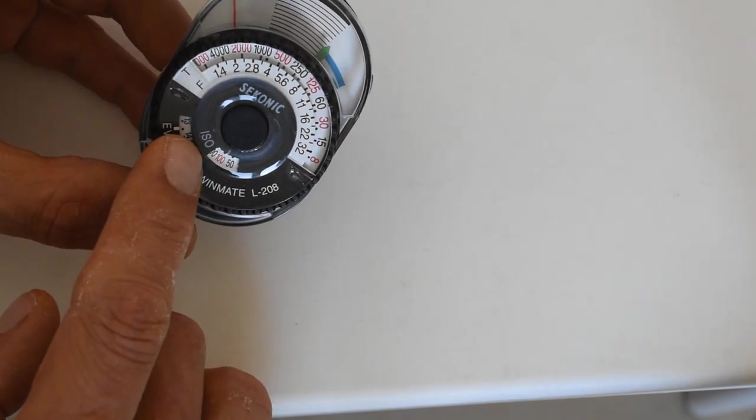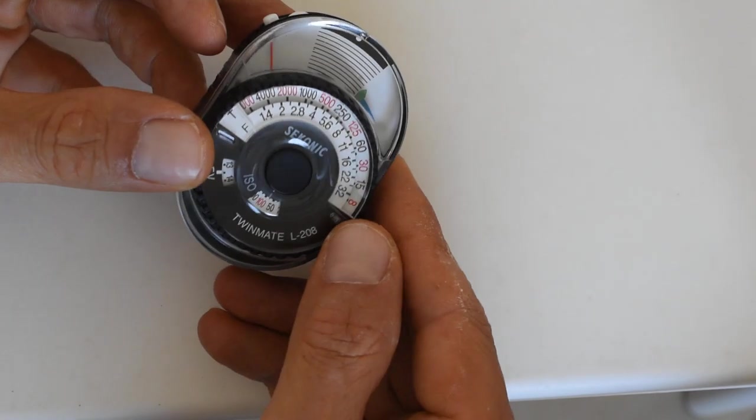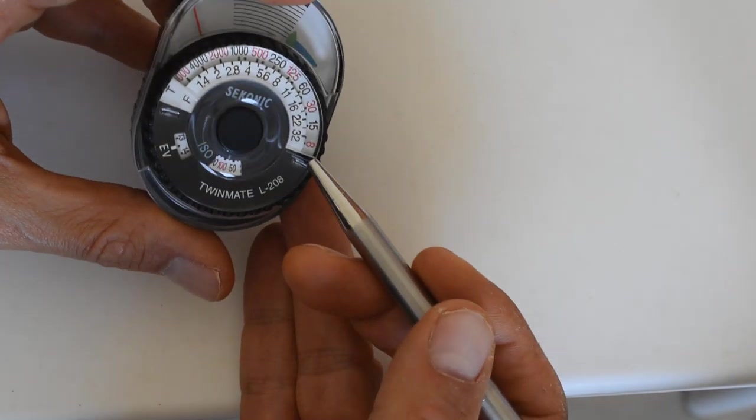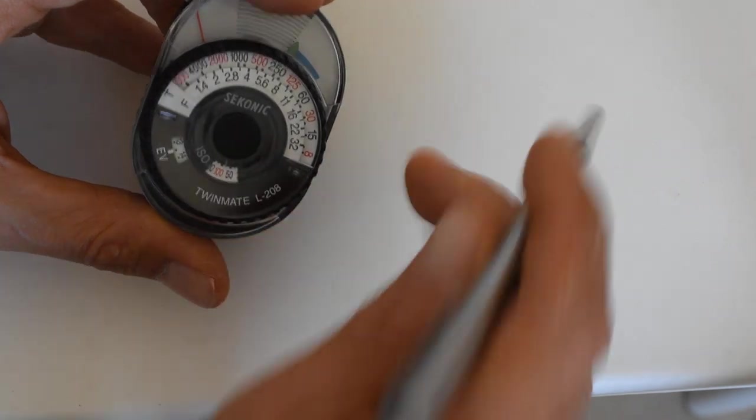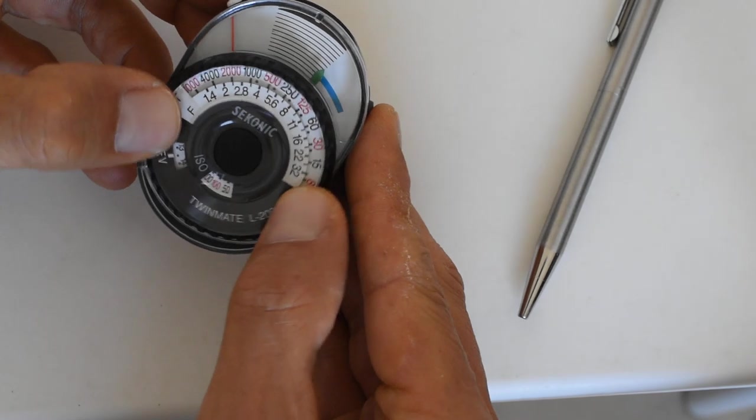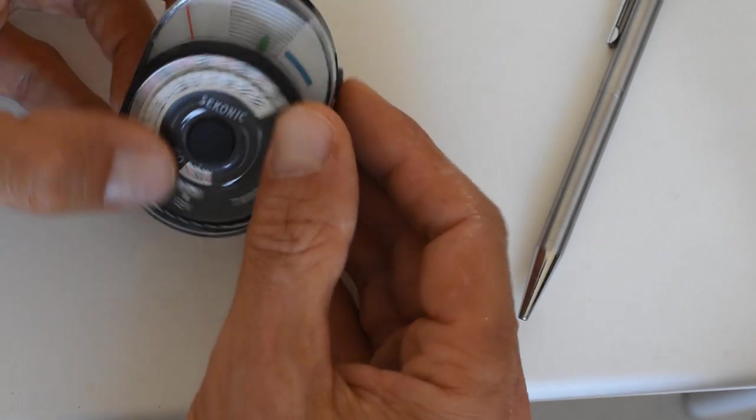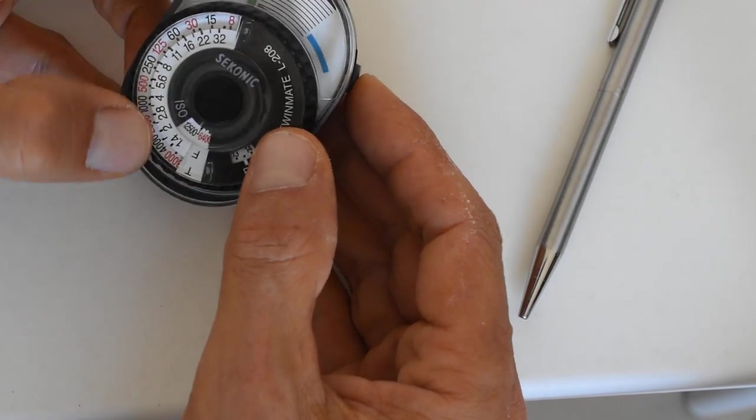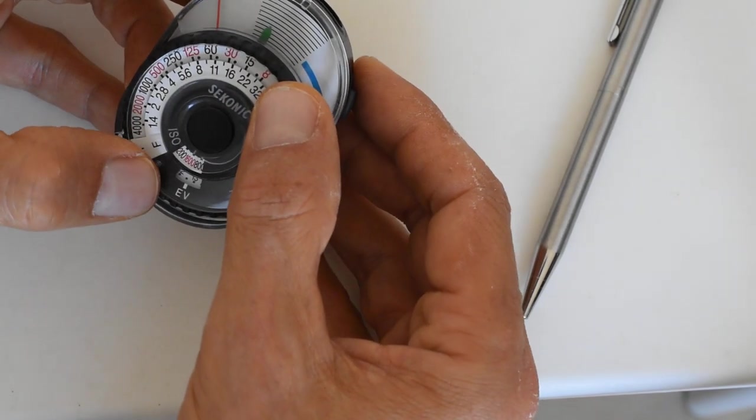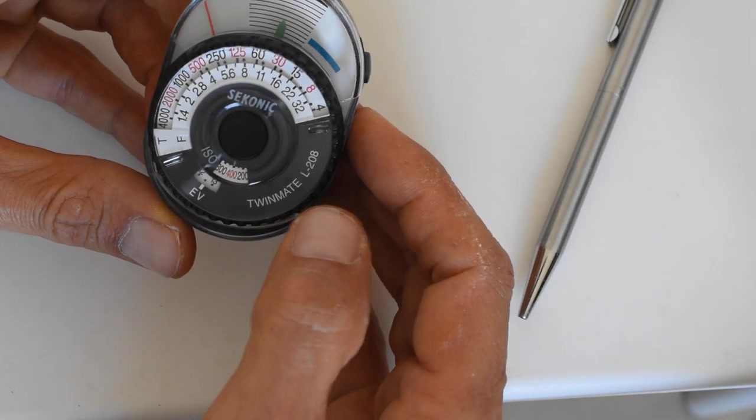So here's how it works. First you're going to set the ISO right here, and you do that by gripping these two little plastic tabs on either side. Grip those with your thumb and rotate this to set your ISO. It's going to go from 12 to 12,500. Pretty nice range. So let's go ahead and set that at say 400. So now I've set my ISO.